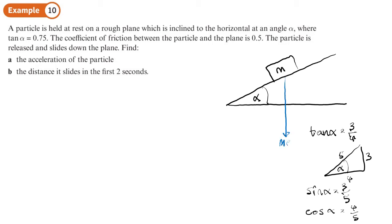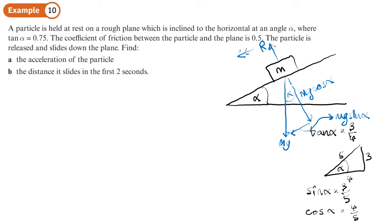The m's will likely cancel out. We have the weight as mg. The component perpendicular to the slope is mg cosα and the component parallel down the slope is mg sinα. We have a normal reaction R. It says when the particle is released it slides down the plane, so friction acts up the slope: that's μR, and since μ = 0.5, this is 0.5R.